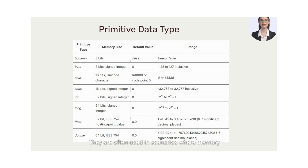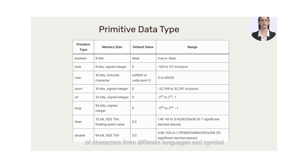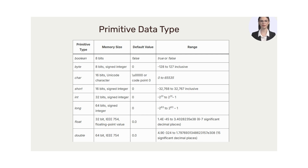They are often used in scenarios where memory optimization is crucial. The character data type represents a single 16-bit Unicode character. It can store any character from the Unicode character set, allowing for the representation of characters from different languages and symbol sets. Character variables are used to store individual characters such as letters, digits, and symbols.